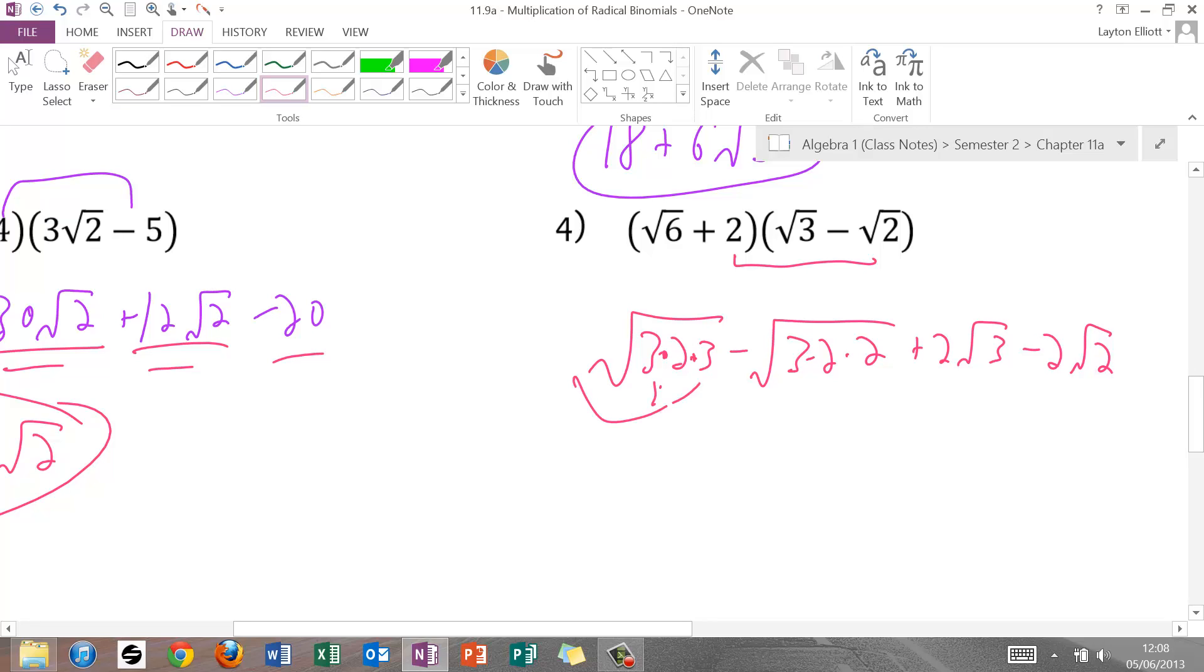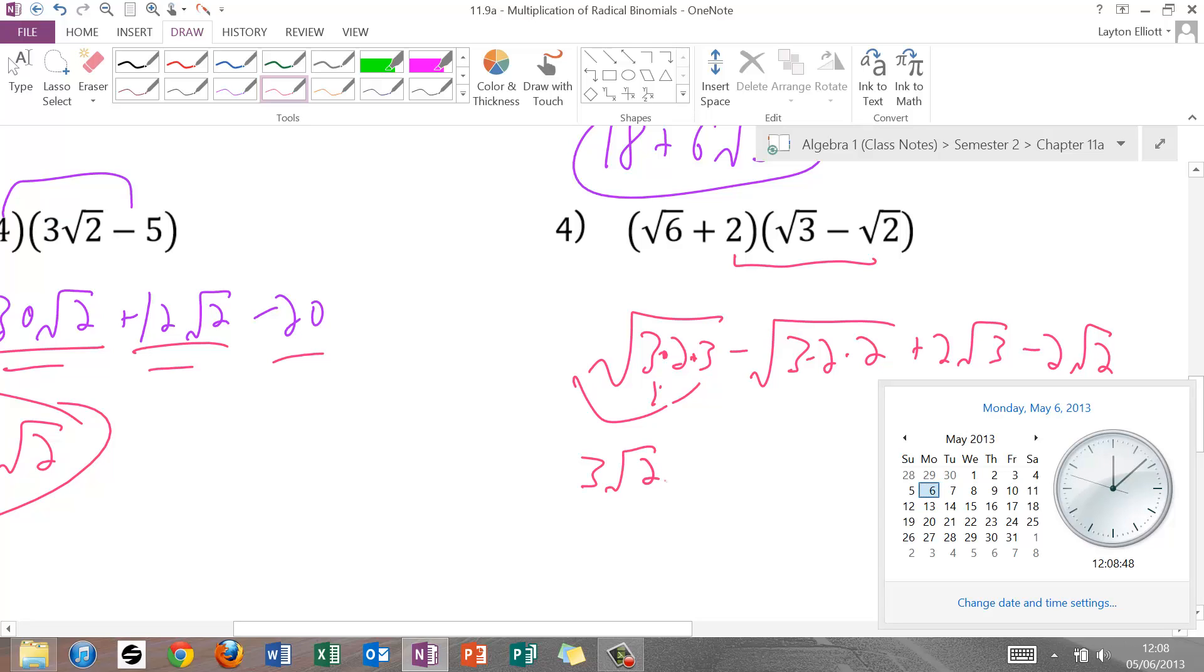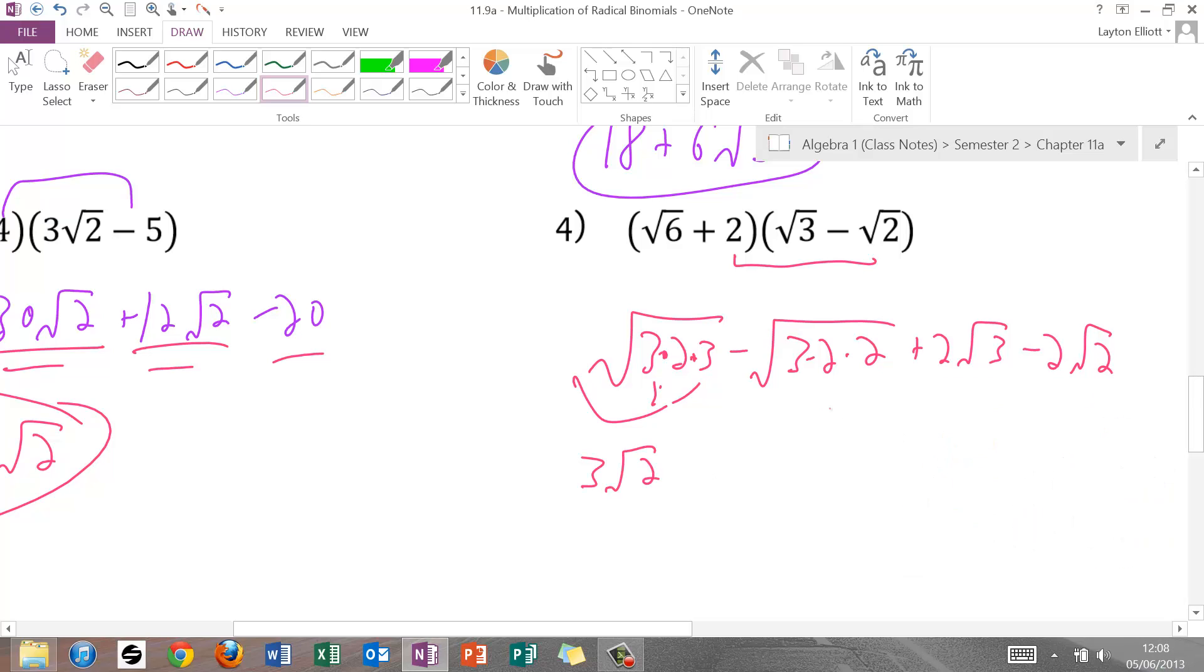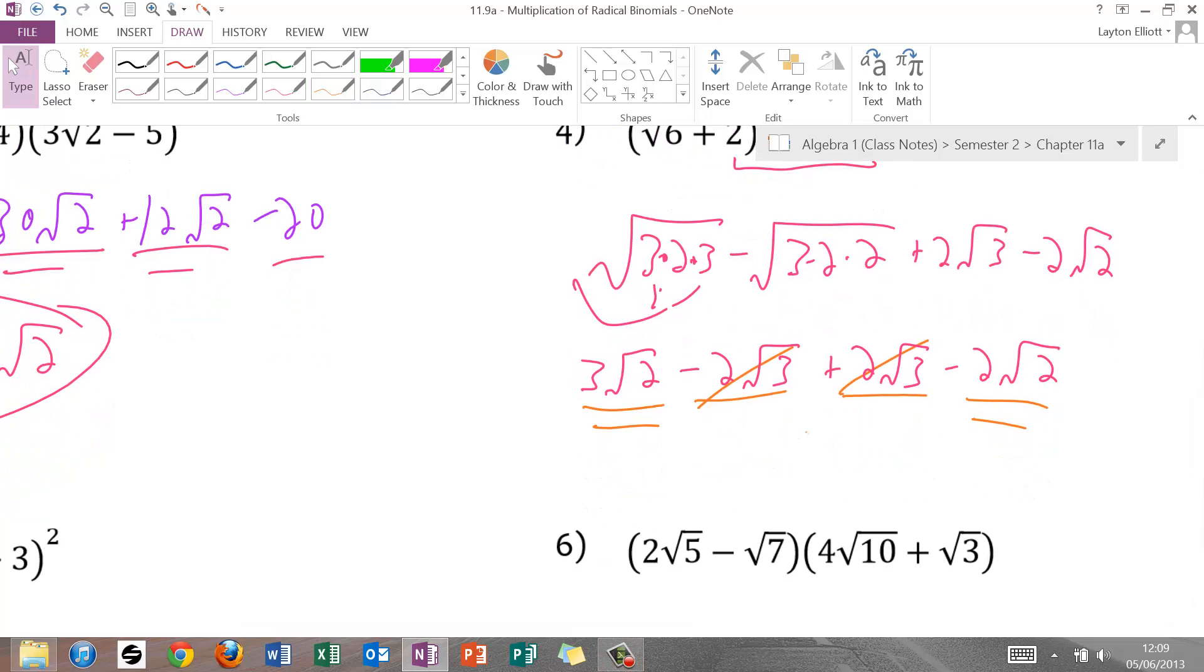And last is negative 2 radical 2. For this first one, we can take out the 3s, giving us 3 radical 2. For the second one, we can take out the 2s, giving us radical 3. Plus, and then I have 2 radical 3 minus 2 radical 2. So now we have to hunt for like terms. Well, here's some, and they cancel out, because 1 is plus, 1 is minus. And then we have 3 radical 2 and negative 2 radical 2. 3 minus 2 is 1, so that just ends up with radical 2.